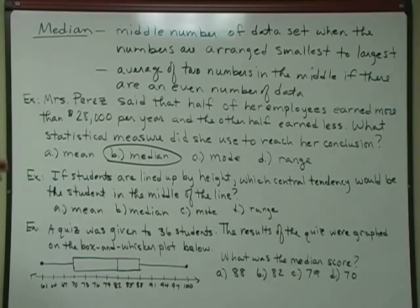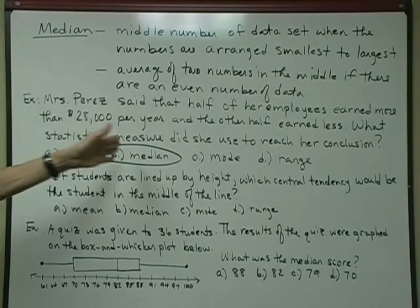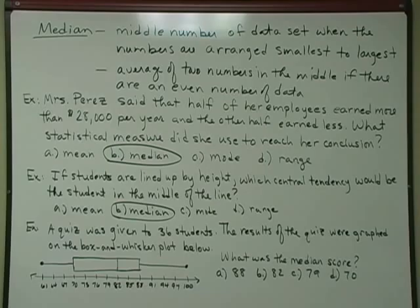The next example, if students are lined up by height, which central tendency would be the student in the middle of the line? Again, if they're lined up by height, from tallest to shortest, or shortest to tallest, the one in the middle is the one that's right smack dab, that would be the median. Again, not only is it the same answer, it's the same letter, answer B, the median. So both of these are a little bit more direct. They don't actually have you find the median, but you have to know what the idea is of the median.